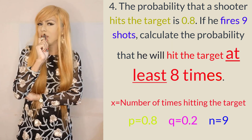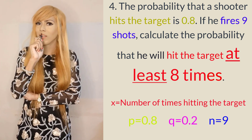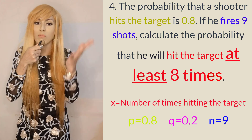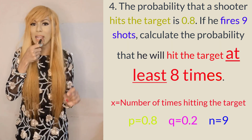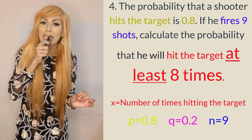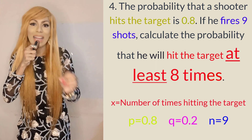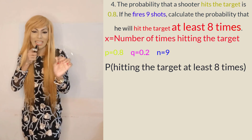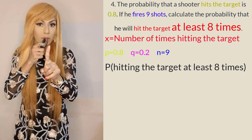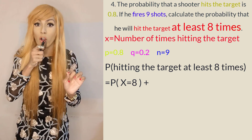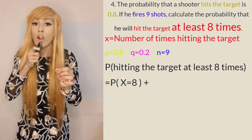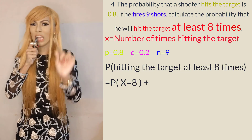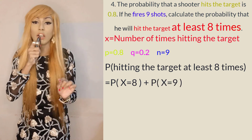Think of it like an exam with 9 questions where you must get at least 8 correct — the only way out is scoring 8 or 9. Same here: at least 8 means X = 8 or X = 9, since the maximum is 9. So P(at least 8 times) = P(X = 8) + P(X = 9).